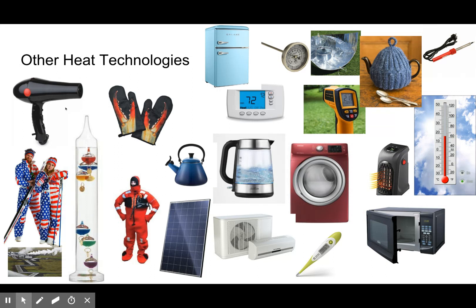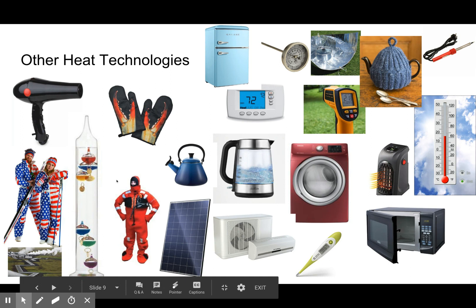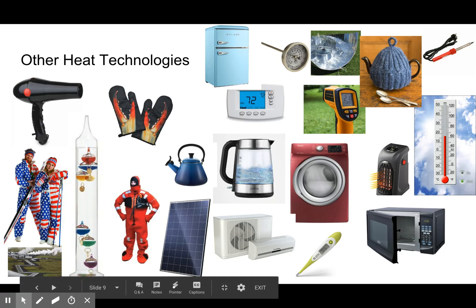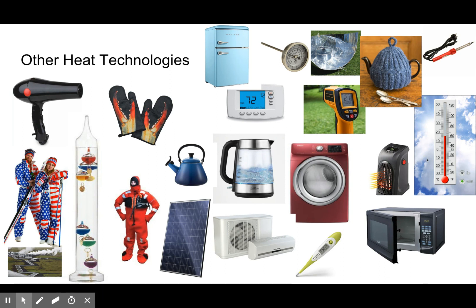Other heat technologies include: hair dryer, oven mitts, kettle, solar panel, survival suit for the ocean, Galileo's thermometer, geothermal energy, electrical kettle, electrical thermometer, microwave, mini heater, air conditioning, Fahrenheit and Celsius thermometers, soldering iron. Even the cozy on a kettle is heat technology. Solar ovens, refrigerator, electrical heat, and this infrared thermometer gun where you point it at something and it tells you the temperature. And dryers.